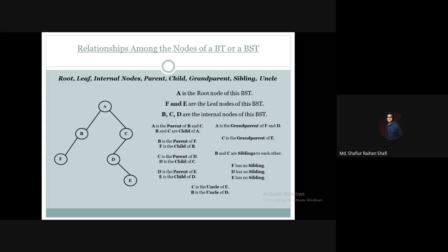Now lastly let us discuss the uncle relationship. In our example, C is considered the uncle of F, because F's parent is B and B's sibling is C. So a node whose parent's sibling is someone — that someone is called the uncle. In that sense, C is the uncle of F. Similarly, B is the uncle of D, because D's parent is C and C's sibling is B. E has no uncle because E's parent is D and D has no sibling.